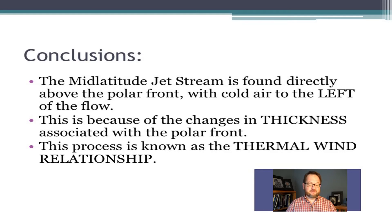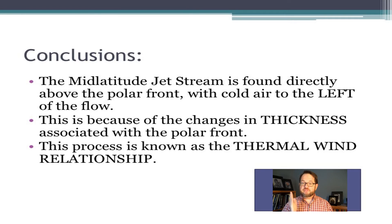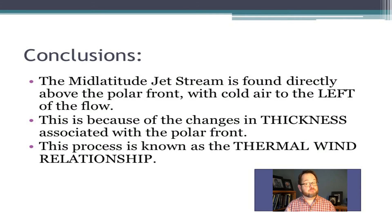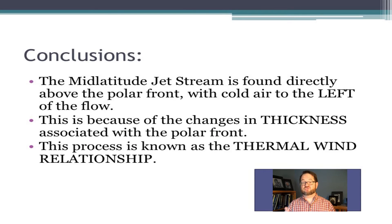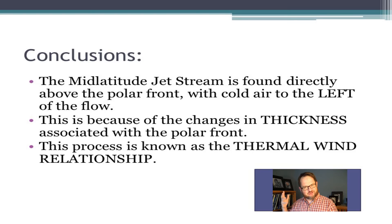To summarize: the mid-latitude jet stream is found directly above the polar front with cold air to the left of its flow. This is because changes in thickness on the cold side and warm side of the polar front caused changes in the heights of different pressure surfaces. Those changes in heights caused pressure gradient forces that had to be balanced — by geostrophic wind and big Coriolis forces. The only way you get those big Coriolis forces is by having that ragingly fast wind aloft: the mid-latitude jet stream. This whole story is neatly described by the thermal wind equation, and the way we put it together as a thought problem is called the thermal wind relationship.